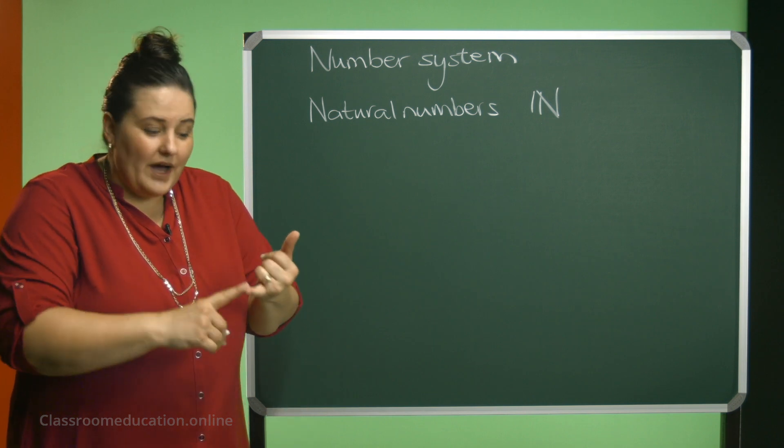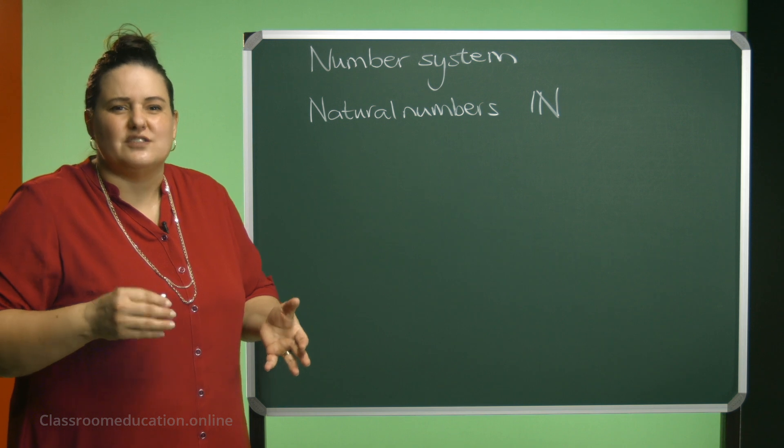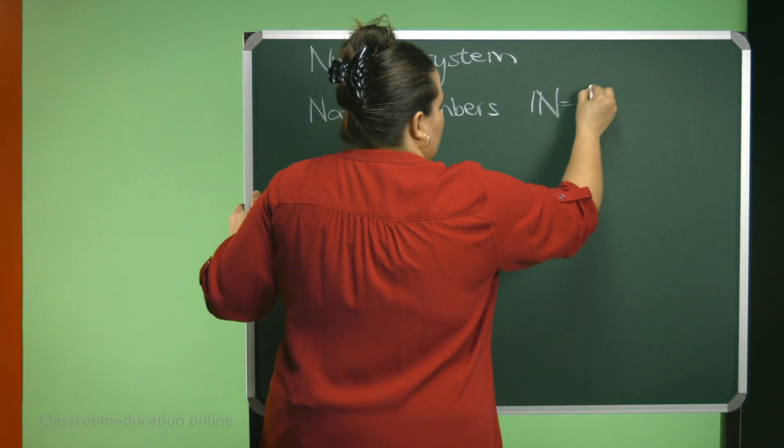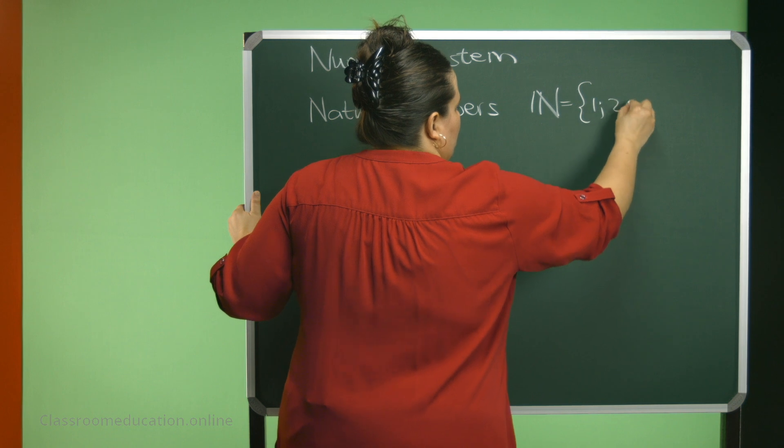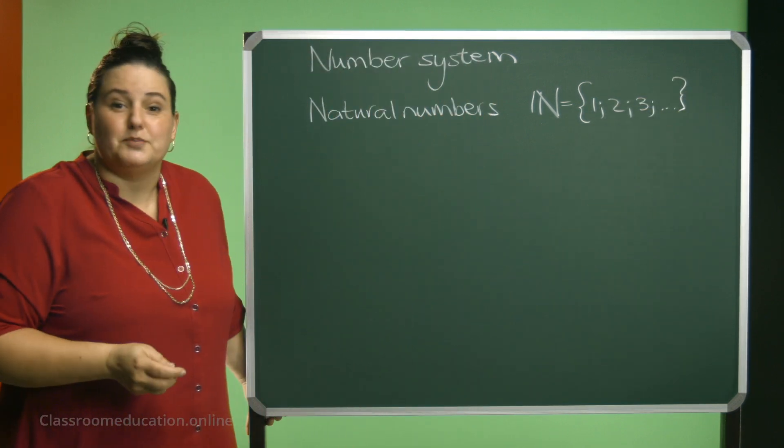Now what are the natural numbers? Natural numbers are 1, 2, 3, 4, 5, those that you have learned since 1, 2, 3 years old. And it goes up to infinity.